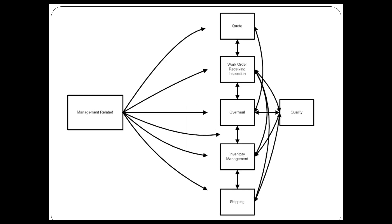Here's another example. What I especially like about this item is the unique nature of the process names. If you look especially in the center, there are some process names you don't typically see — things like overhaul and inventory management. It's clear that this organization went to some lengths to ensure the process names were truly representative of what they do. We also have a great deal of process-to-process interaction — for example, the shipping process interfaces with both the quality and the work order receiving inspection process.